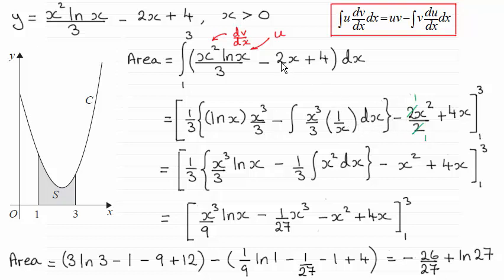I've gone on to integrate the minus 2x, giving minus 2x squared over 2, and the constant 4 becomes 4x. Then I've just switched these two terms around so I can do without the brackets, and pulled out the third and cancelled the x into the x cubed to give x squared.